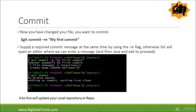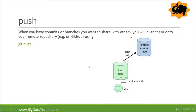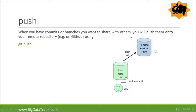After committing the changes to your local repository, you have the option to push. The git push command takes the commits or branches you want to share with others and pushes them onto your remote repository — for example, on GitHub. So add and commit you do on the local repository, while push and pull you do for the remote repository. We will talk about pull later on. We will cover more basic git commands in our next lecture.